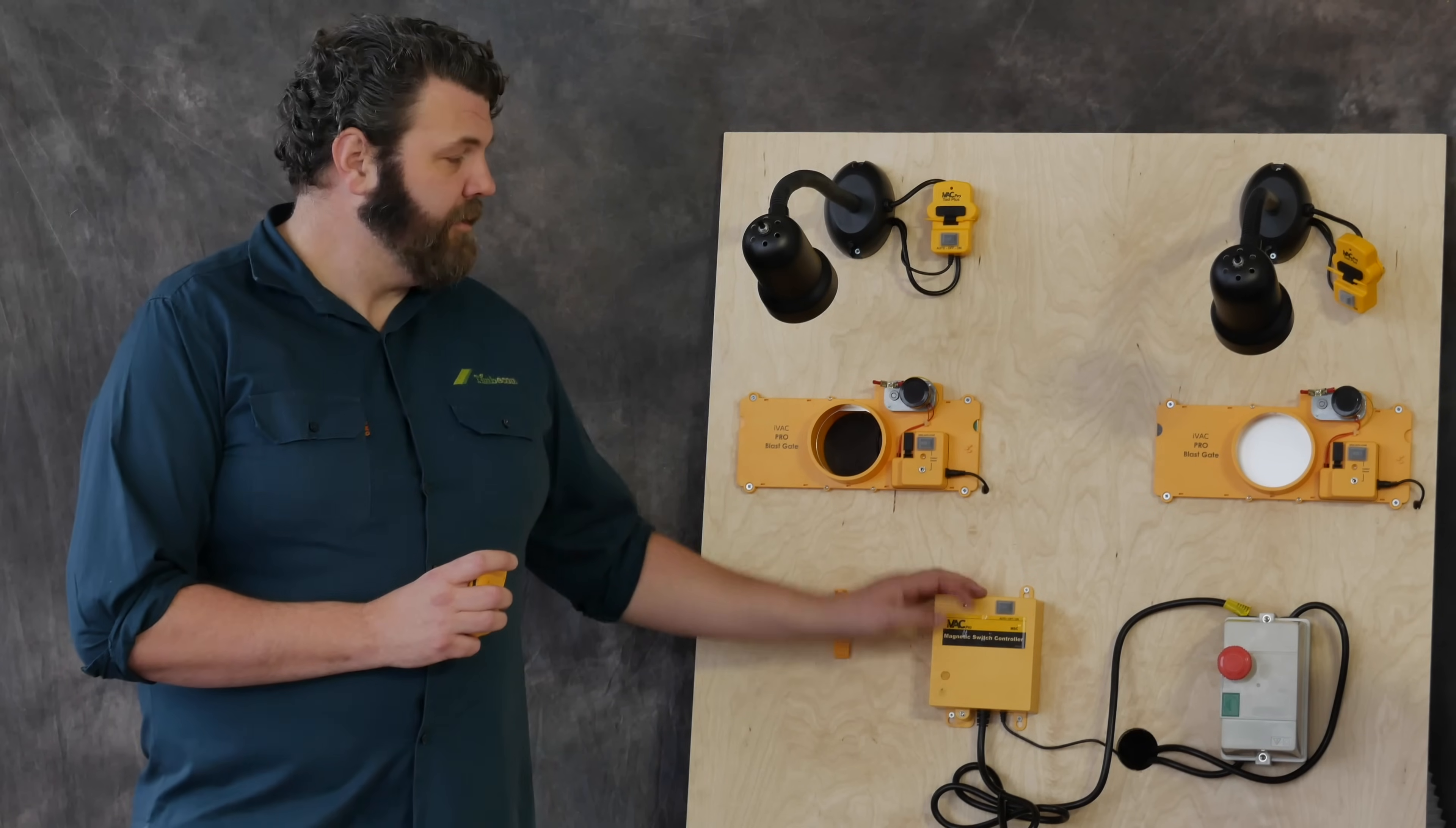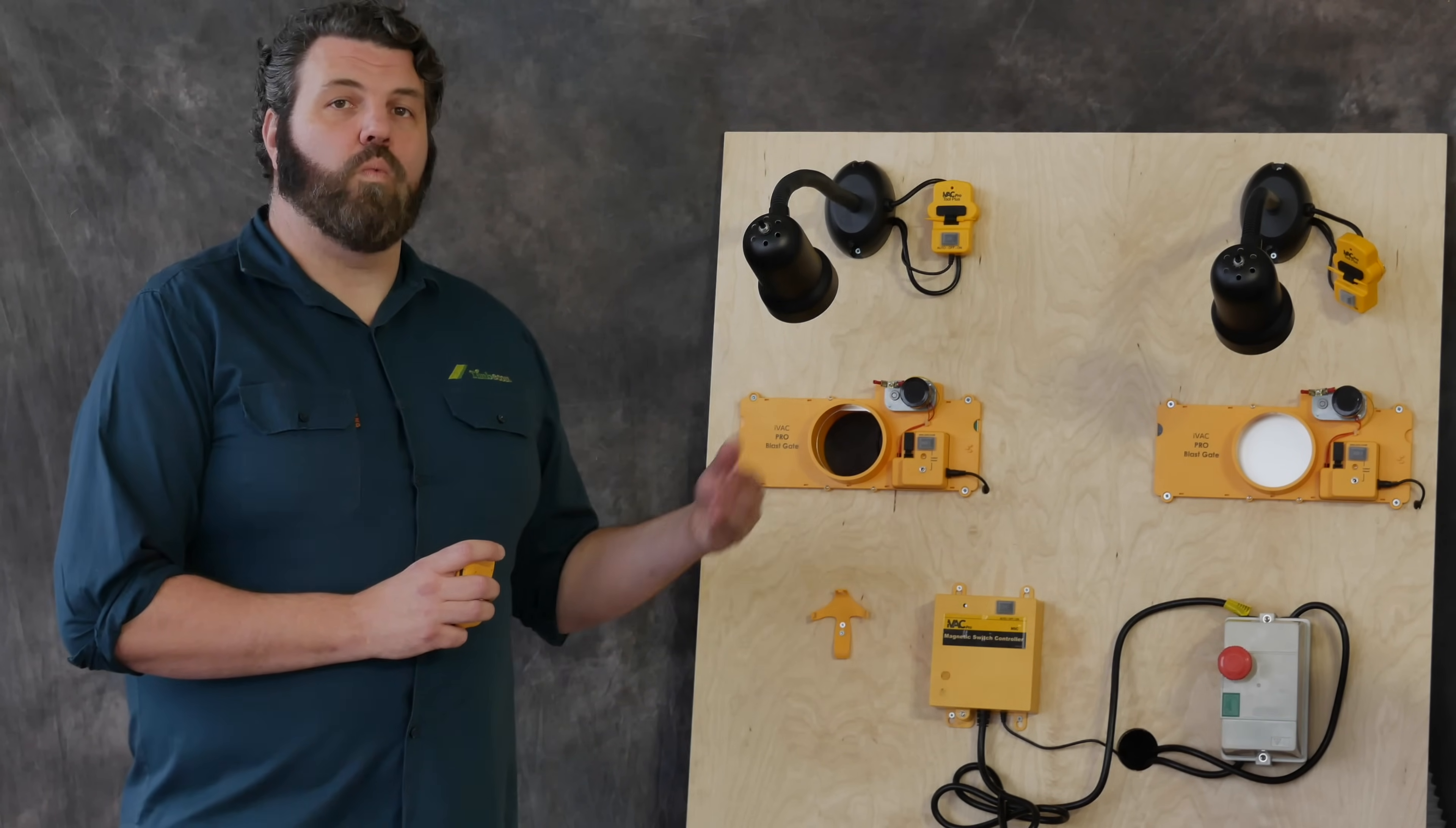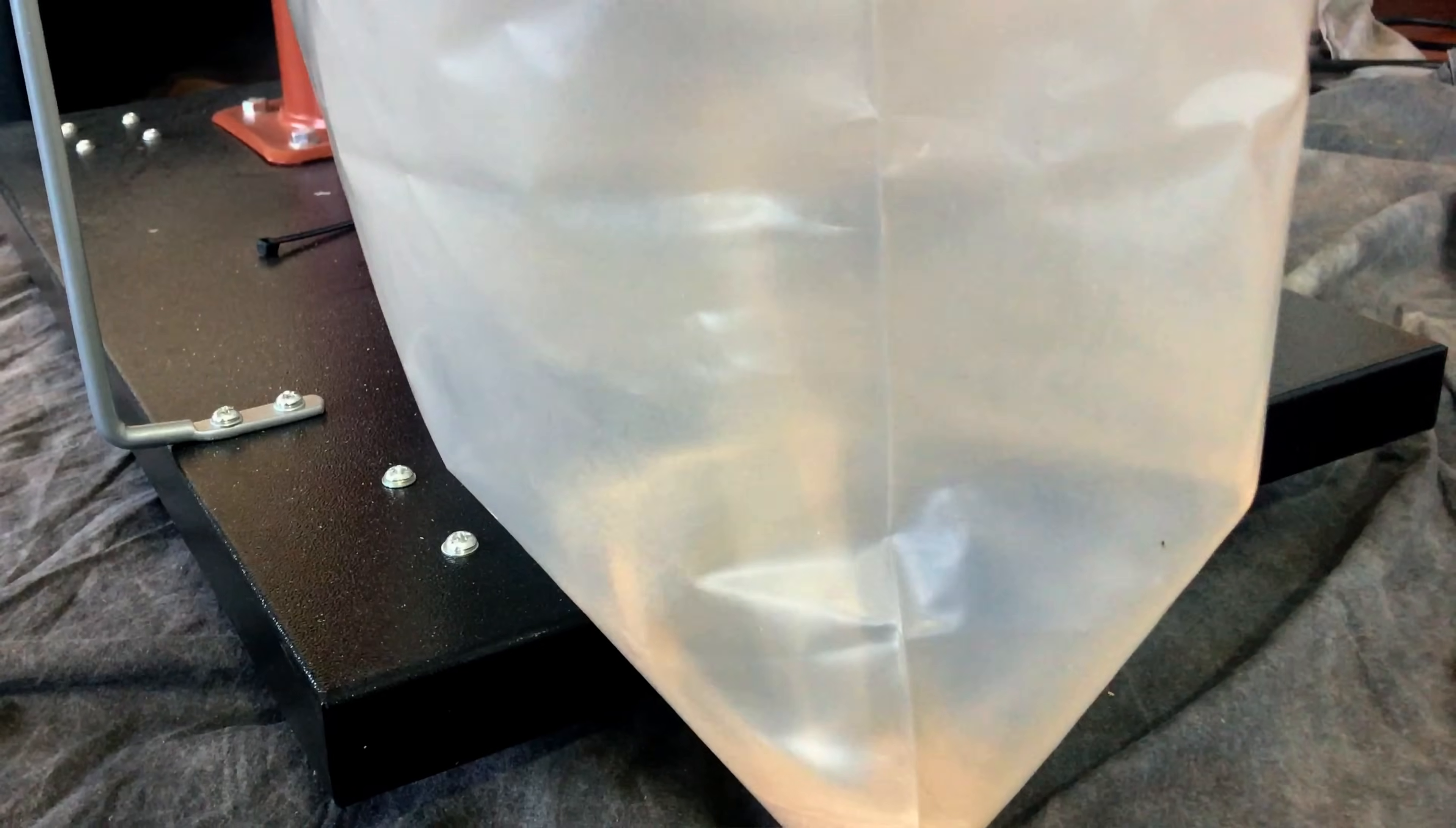In the Australian and UK markets, most dust extractors are fitted with an NVR, or no volt release switch. What that means is that when you lose power to the dust extractor and power is restored to the dust extractor, the dust extractor won't turn back on, which is a great safety feature to have.